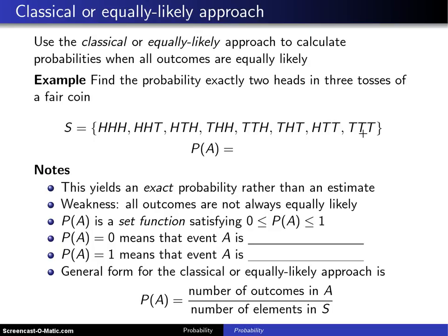it turns out by the multiplication rule there are two to the third power, or eight different outcomes that can occur, and here they are listed out. Heads, heads, heads, heads, heads, tails, etc. There's the eight of them.